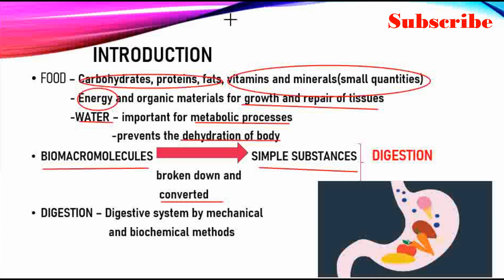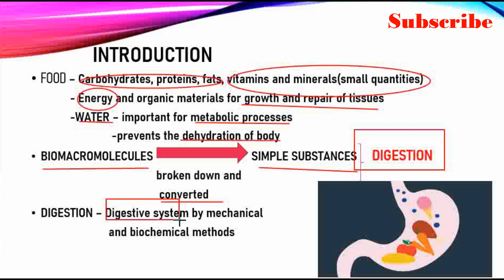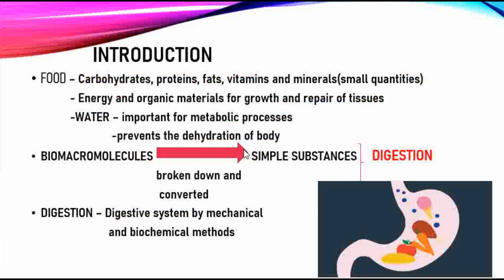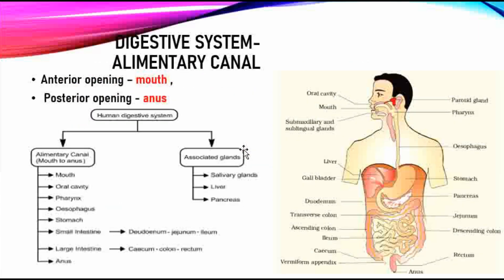These macromolecules — carbohydrates, proteins, fats, vitamins, and minerals — have to be broken down and converted to simple substances. The process by which these macromolecules are converted to simple substances is called digestion. Digestion occurs in the digestive system by mechanical and biochemical methods.